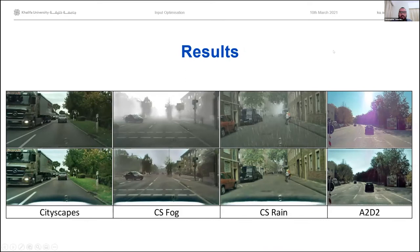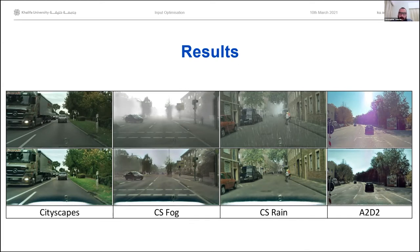Here are some example images processed by our ION approach. This model was trained to target the segmentation model that has only seen Cityscapes. You can see that the Cityscapes image hasn't been changed very much — some slight changes in contrast and color in some areas, which presumably helps the segmentation. For the fog and rain images, it's done a fairly good job of removing the impact of the weather. For example, some areas have had contrast changed slightly and some edges have been emphasized. The model is essentially learning whatever transformation it needs to make to optimize the segmentation task, looking for image features most useful to the segmentation network. In the Audi dataset image — taken looking directly at the sun — it's done quite a good job of removing the lens flare to help the segmentation model.